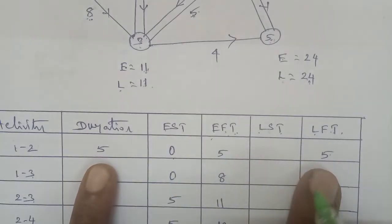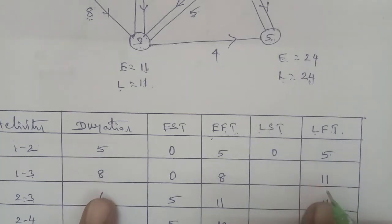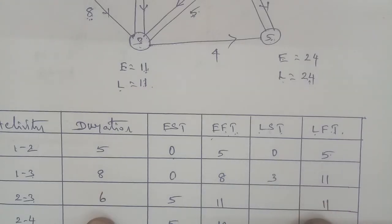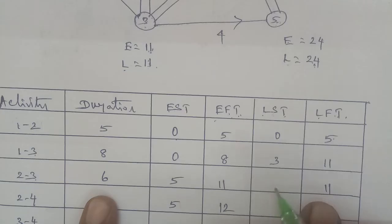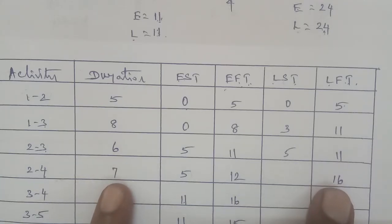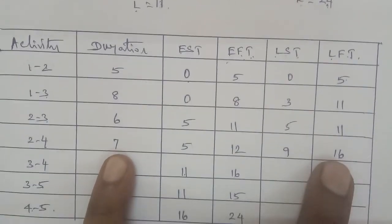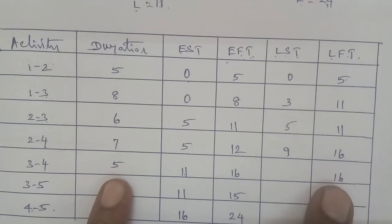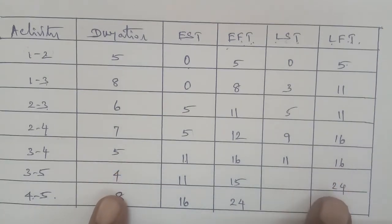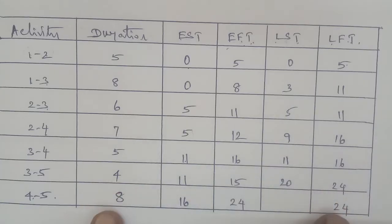Now we calculate the latest start time: LST equals LFT minus duration. For activity 1 to 2: 5 minus 5 equals 0. For activity 1 to 3: 11 minus 8 equals 3. For activity 2 to 3: 11 minus 6 equals 5. For activity 2 to 4: 16 minus 7 equals 9. For activity 3 to 4: 16 minus 5 equals 11. For activity 3 to 5: 24 minus 4 equals 20. For activity 4 to 5: 24 minus 8 equals 16.